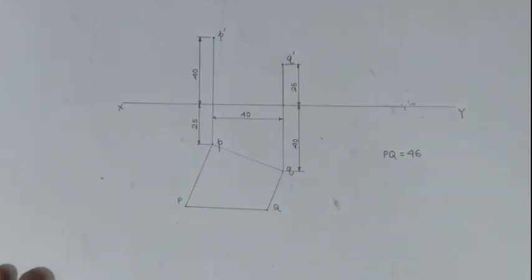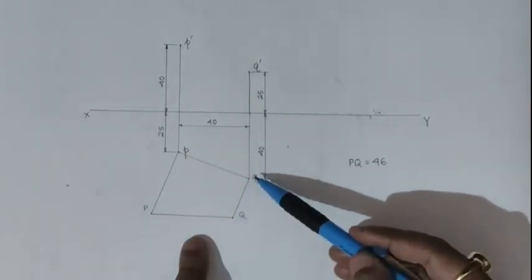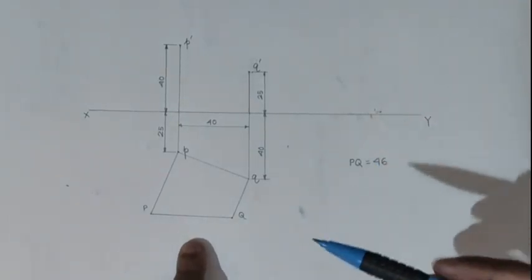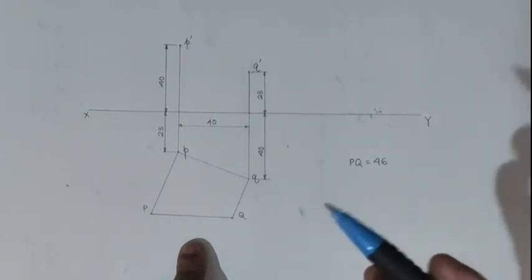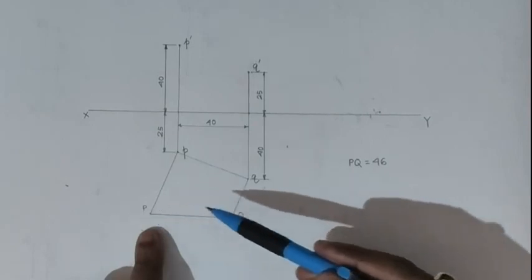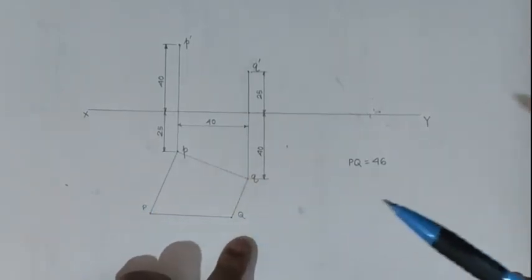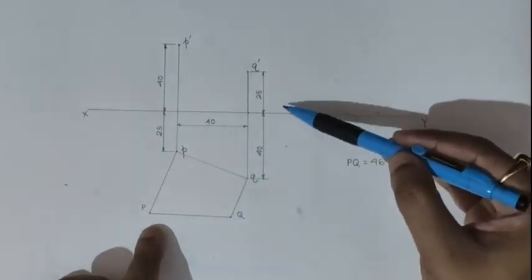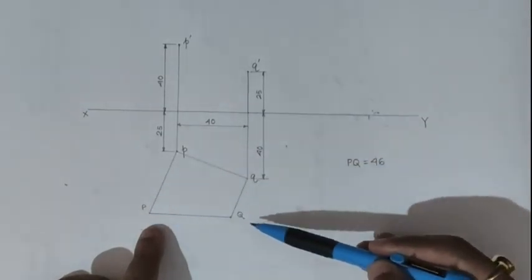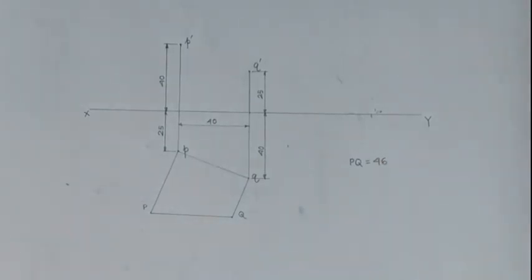So this is the solution of the first question. One thing you have to remember: here we are drawing the two perpendiculars in the same direction because both points P and Q are above the HP. If point P were above the HP and point Q were below the HP, then the two perpendiculars would be drawn on opposite sides of each other. Since both P and Q are above the HP, we draw the two perpendiculars in the same direction.